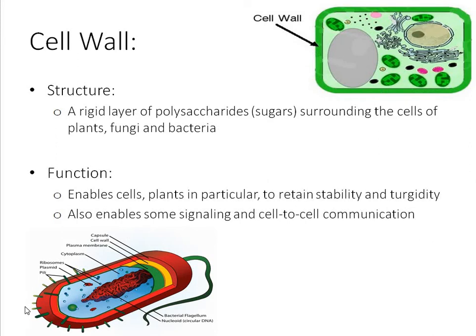Moving to probably the last of our plant structures: the cell wall. Structurally, it is a rigid layer of polysaccharides, or sugars, surrounding the cells of plants, fungi, and bacteria. As shown in the diagram, it is a really thickened wall — unlike animal cells with a plasma membrane that is quite soft and fluid. Functionally, the cell wall enables cells of plants in particular to retain stability and turgidity, and also enables some signalling and cell-to-cell communication.